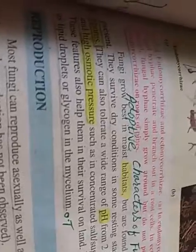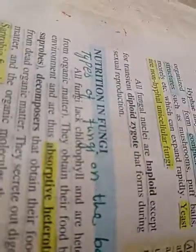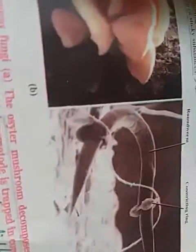آج آپ نے پڑھا nutrition in fungi — سب سے پہلے fungi as absorptive heterotrophs، پھر types of fungi on the basis of nutrition: saprotrophic، parasitic، predators اور mutualistic۔ Mutualistic میں دو چیزیں پڑھیں: lichens اور mycorrhiza۔ Mycorrhiza کی types — endo اور ecto mycorrhiza۔ Then last: adaptive characters of fungi۔ Thank you۔